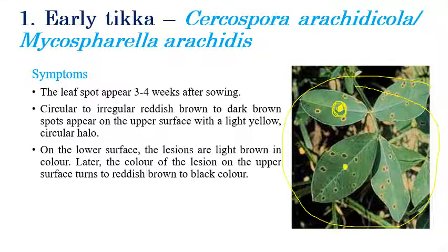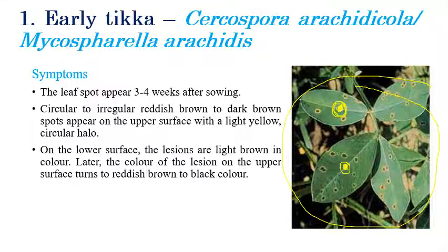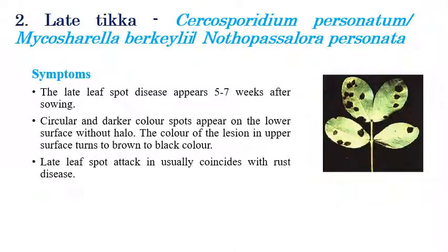The yellow halo is clearly visible, and brown color spots can be seen on the lower surface. In later stages of the disease, the spots on the upper surface slowly convert into brown or black color. This is the characteristic symptom of Early Tikka.